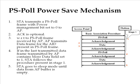In response, the AP sends the first queued frame to the station. The station receives the queued data frame, and if the More Data field in the frame is set, it sends another PS-Poll frame to the AP. The station continues to send PS-Poll frames to receive all queued frames until none are left, then goes back to sleep until the next listen interval.